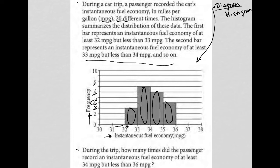So the question says, during the trip, how many times did the passenger record an instantaneous fuel economy of at least 34? So at least 34 means from 34 and on, right? So that would be everything here and everything here.